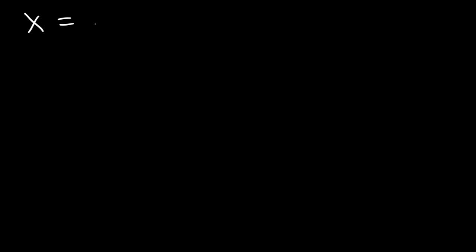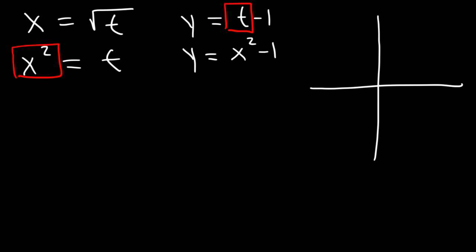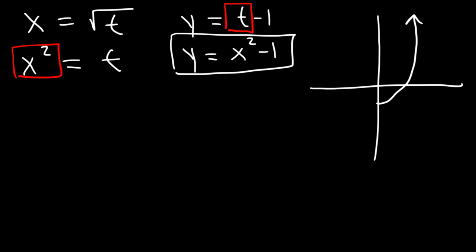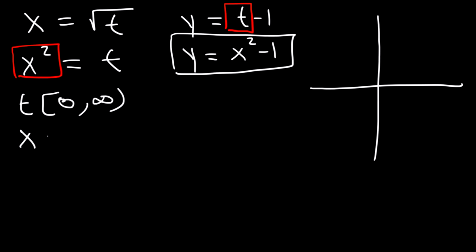Let's say x equals the square root of t and y equals t minus 1. To eliminate the parameter, square both sides of the first equation: x² = t. Substituting into the second: y = x² − 1. This looks like y = x² shifted one unit down. However, since t cannot be negative (it's inside a square root), t ≥ 0, which means x ≥ 0 — so we only have the right side of the graph.